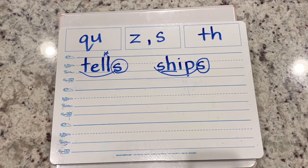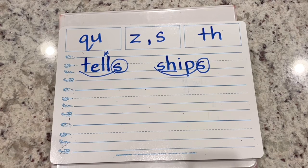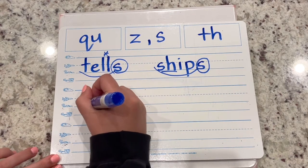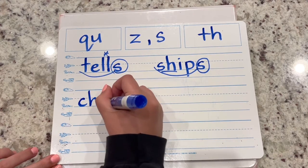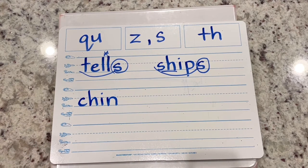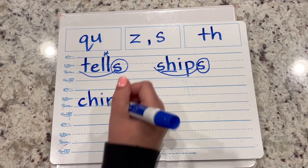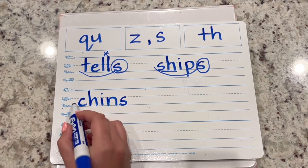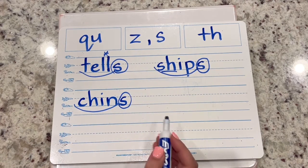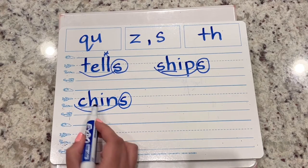Let's write the word chins. The base word is chin: CH-I-N. What do I add to make it say chins? The suffix S. Scoop your base word, circle your suffix, underline CH.